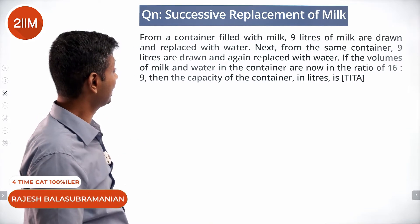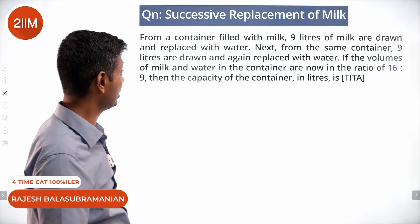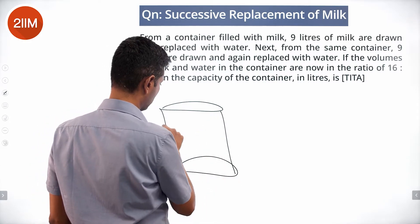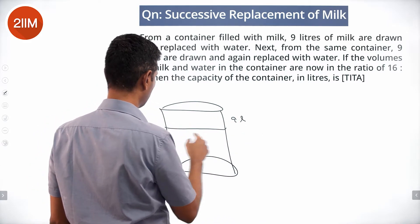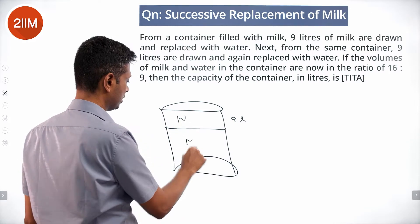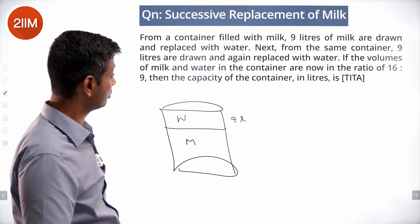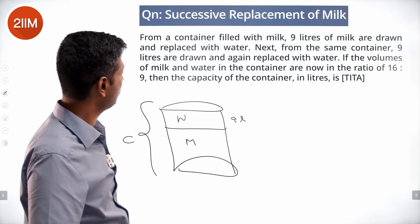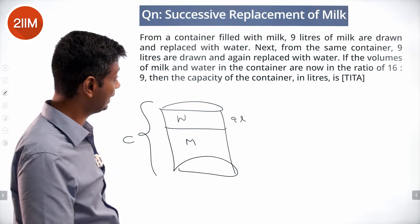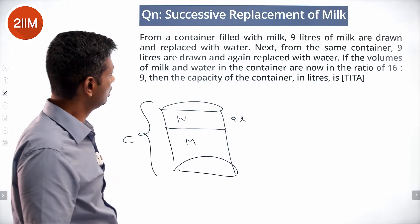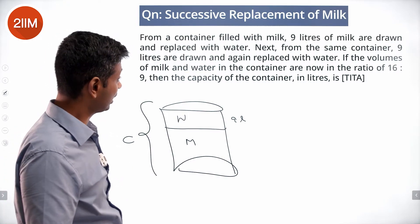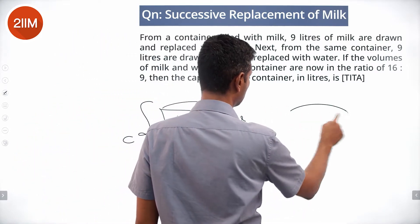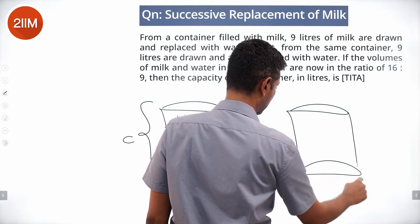A container is filled with milk. Nine liters of milk are drawn and replaced with water. From this mixture, nine liters are removed again and replaced with water. The overall container capacity is C. After doing this operation twice, the volumes of milk and water in the container are in the ratio 16 is to 9.